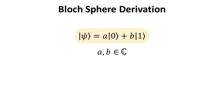The general qubit is a linear combination of the |0⟩ and |1⟩ kets, which are the orthonormal basis of the two-dimensional Hilbert space. Here, A and B are complex-valued probability amplitudes.